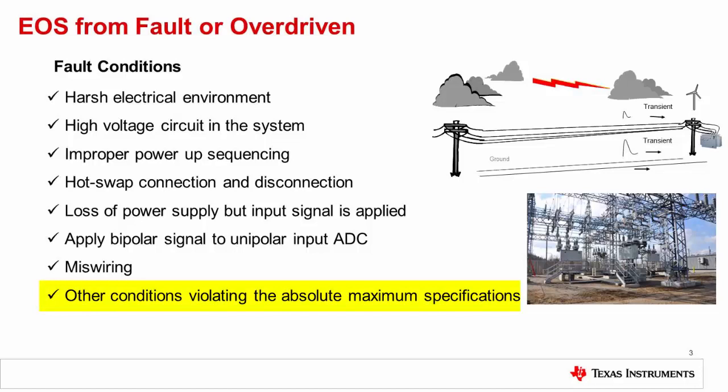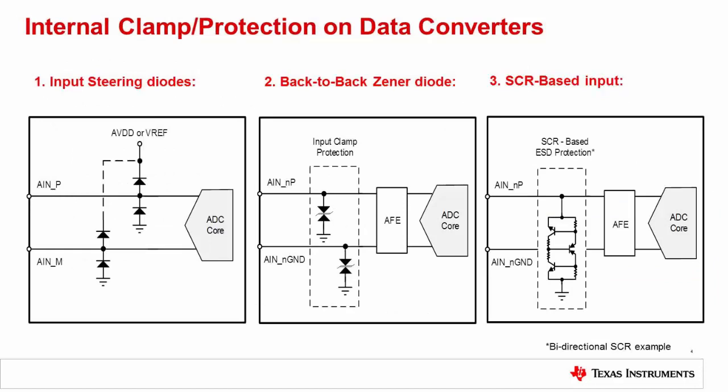In addition to these common issues, there are many other ways to damage devices. The absolute maximum specifications in the datasheet define the conditions under which you can operate the device without damaging it. This presentation will explain how to interpret the absolute maximum specifications and provide circuit design techniques that will protect against EOS and ESD damage. Furthermore, we will focus on the impact that the protection circuits have on system performance, with the ultimate goal being to protect the device from EOS and ESD while having minimal impact on performance.